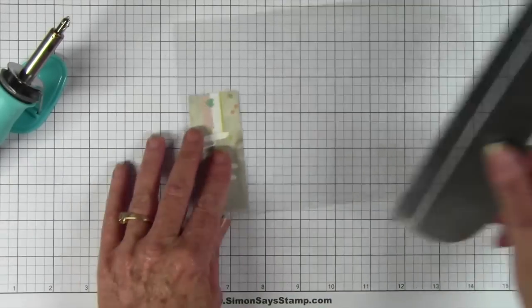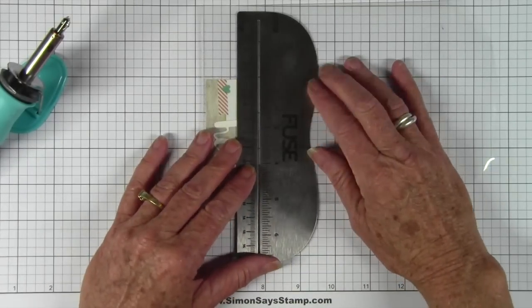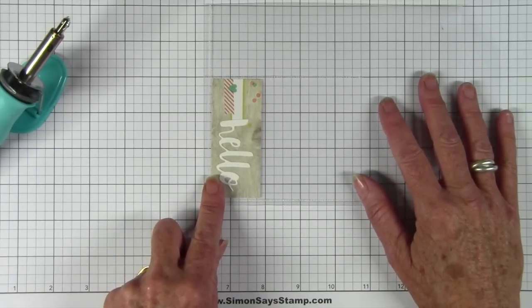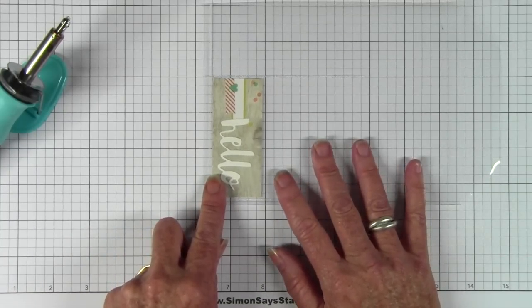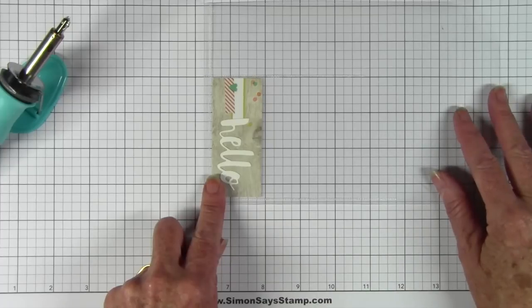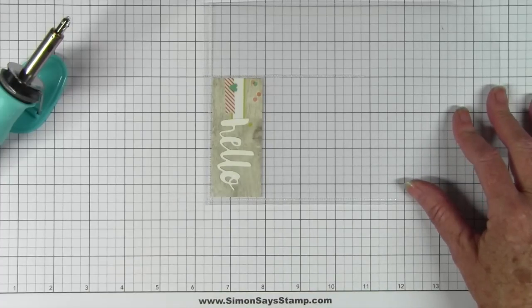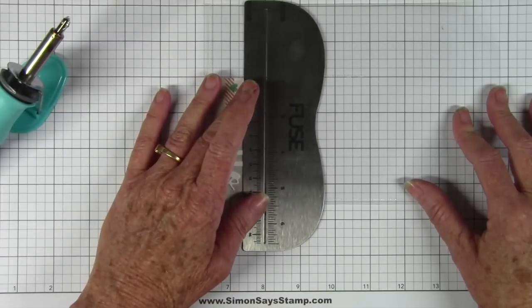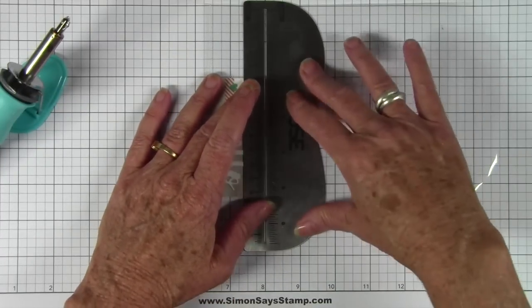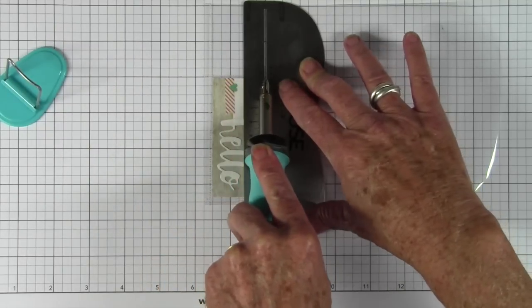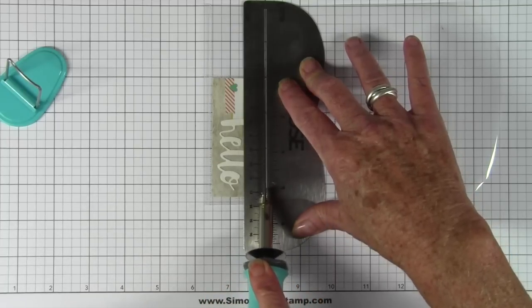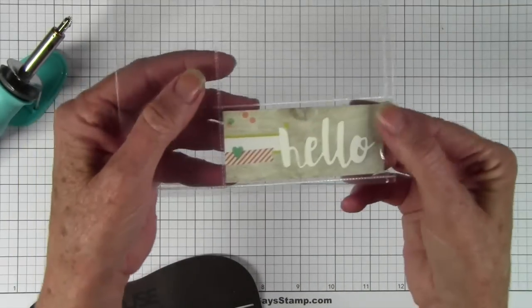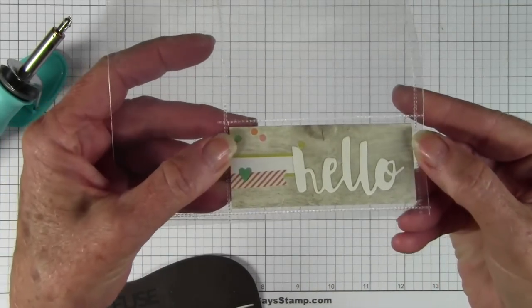Once I have that done, now I can start sealing in and creating a little shaker. Let me get this lined up on my... This acetate or clear stuff is so slippery that if you needed to, you could put some washi tape down to kind of hold it in place while you're moving things around. So now I just need to seal the top of that. And I've created a cute little pocket for my greeting.